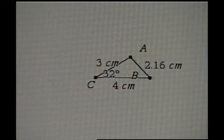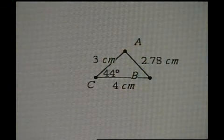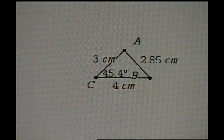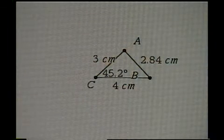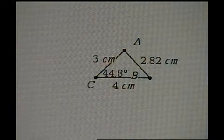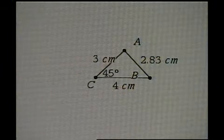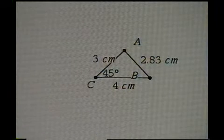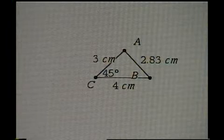A familiar angle of 45 degrees is next. Let's ease it on up. The graphing calculator shows 45.2 — there's 45. And 2.83 is the measure of side C now.